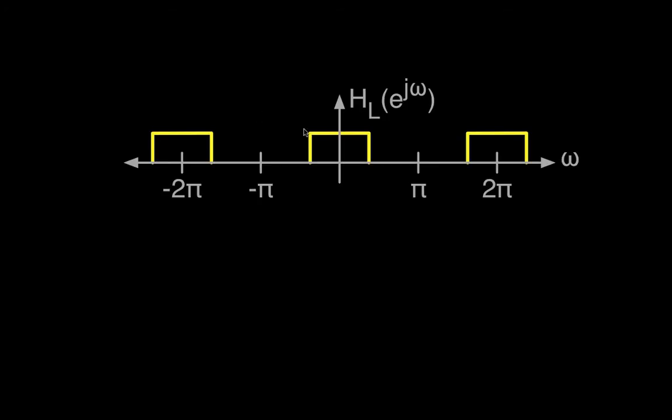What we have here on the screen is the Fourier transform or the frequency response of an ideal low-pass filter. The idea is between some value which I'll label omega c and minus omega c, the frequency response has a value of 1, which means that any frequencies in the signal that are input to the low-pass filter will be passed through unaffected.